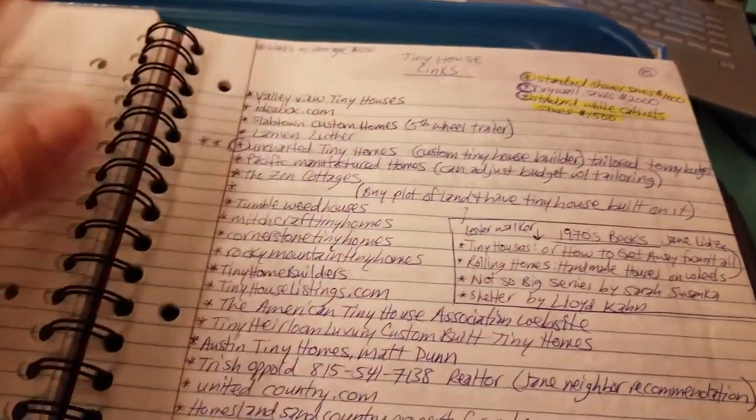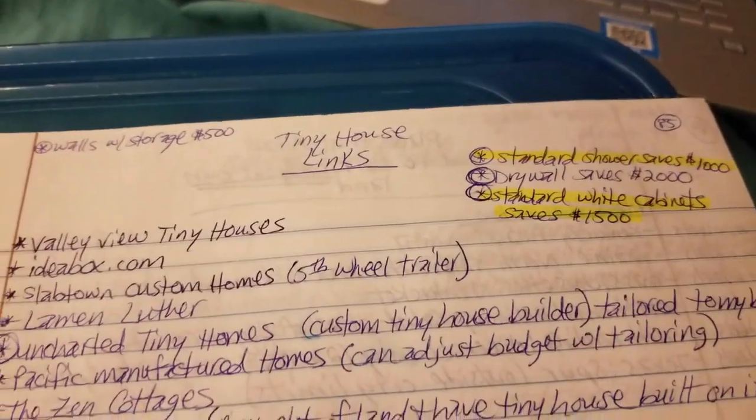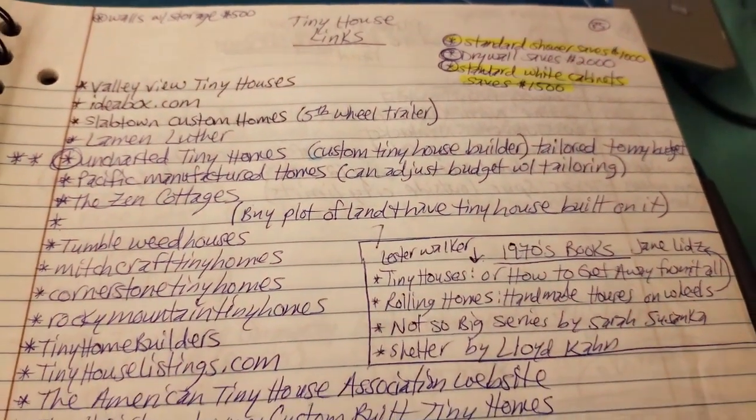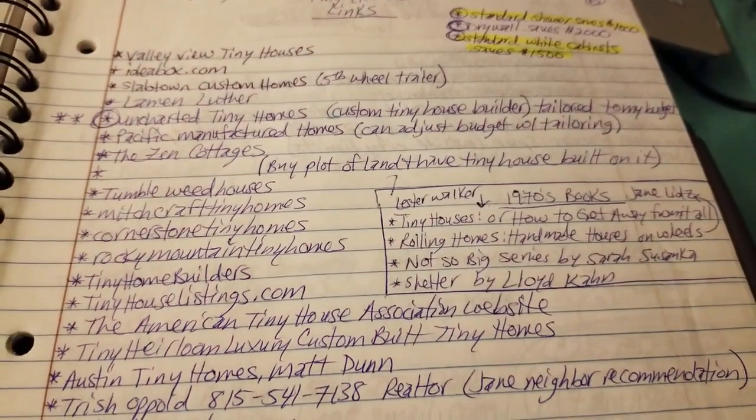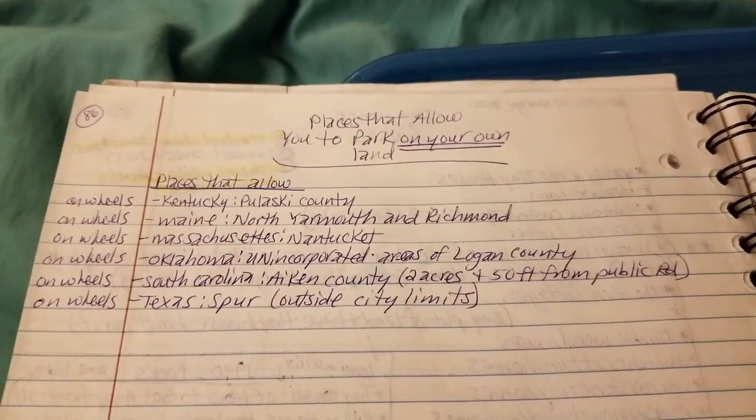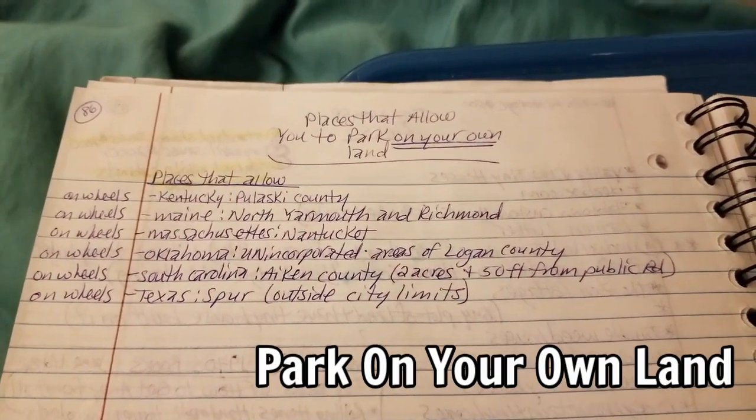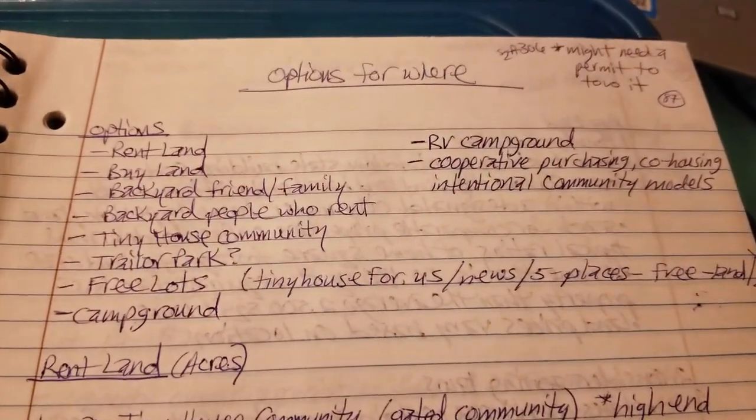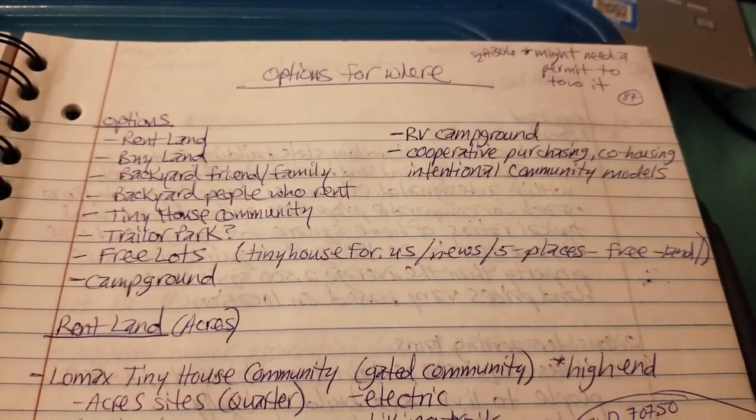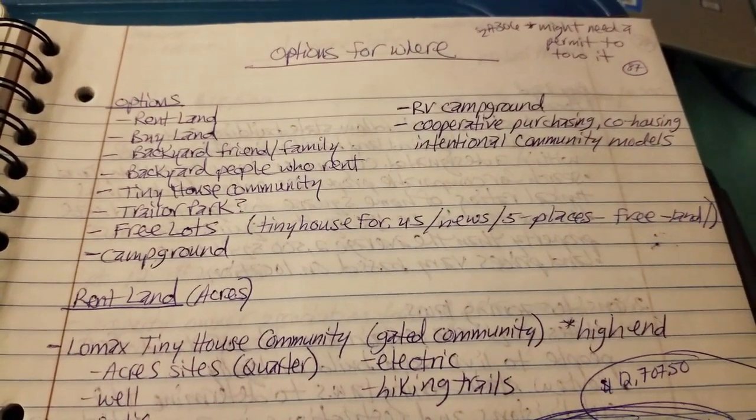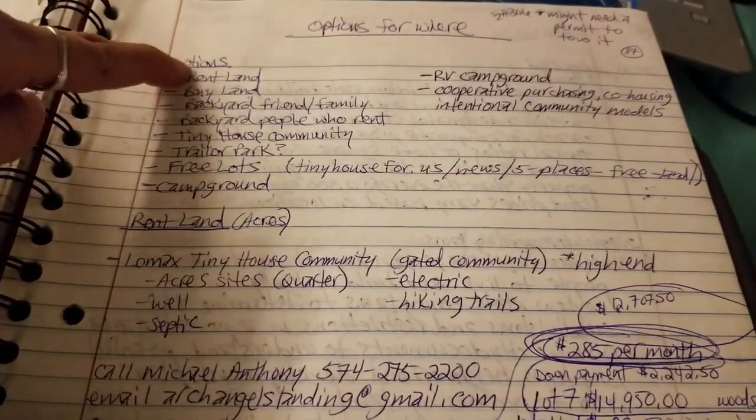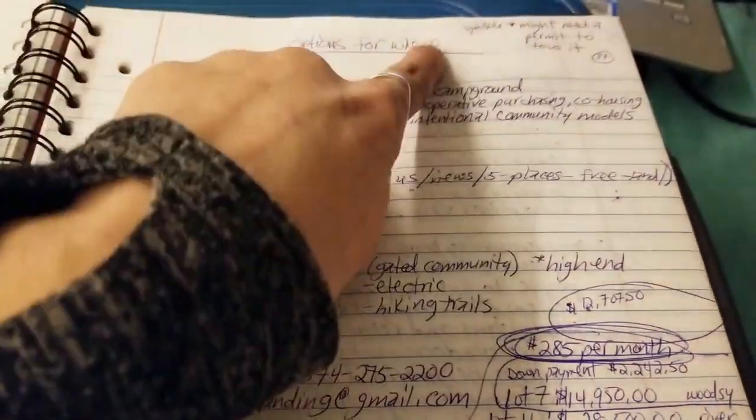Then I randomly cut off and just did links. Any link for any tiny house, anything, I put on this page so that I could refer back to it if I needed it. These places allow you to park on your own land. Options for where I could rent land, buy land, backyard of a friend, family, backyard of people who rent, community, a trailer park, campground, free lots. Many different options, and I wanted to research and do my due diligence on all of them.